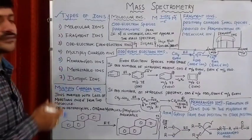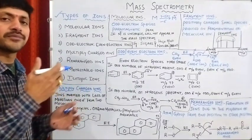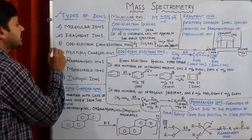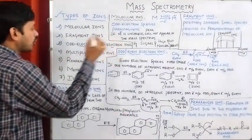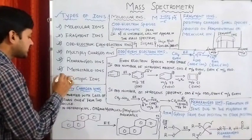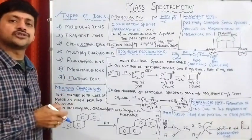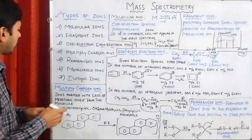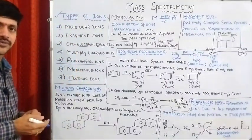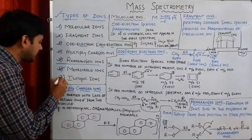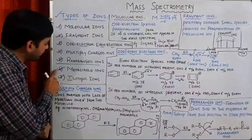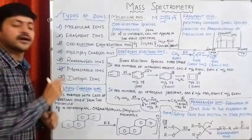Here is the list of ions which are going to be produced during the fragmentation procedure and during the ionization process: molecular ions, fragment ions, odd electron ions, even electron ions, multiply charged ions, rearranged ions, metastable ions, and isotopic ions. In this lecture, we are going to discuss the first five types — from molecular ions to rearranged ions. For metastable ions and isotopic ions, we need longer time, so we are going to have two separate videos for those.